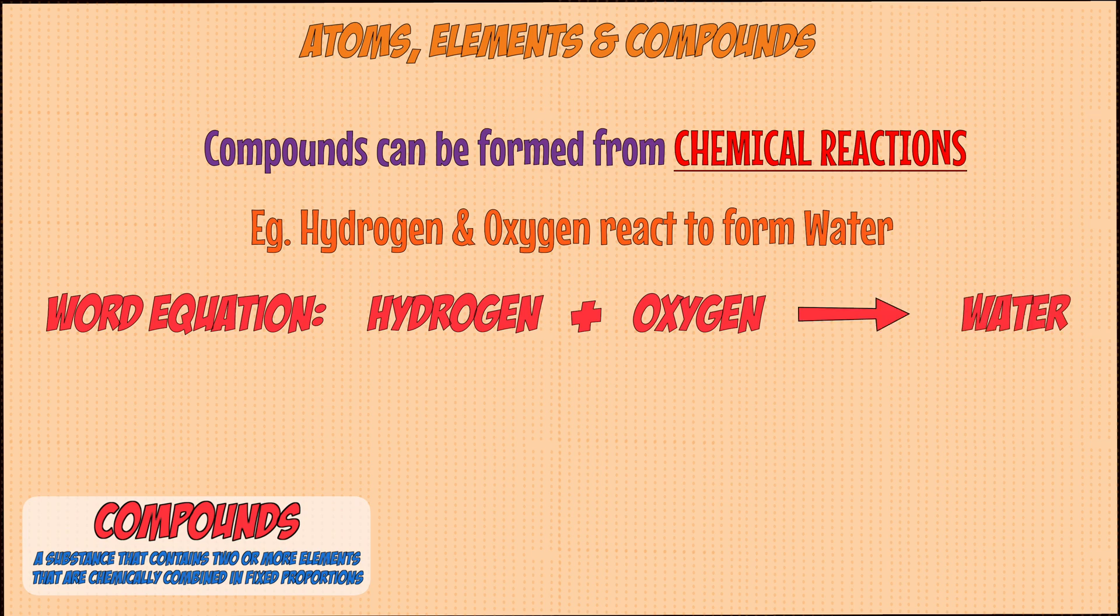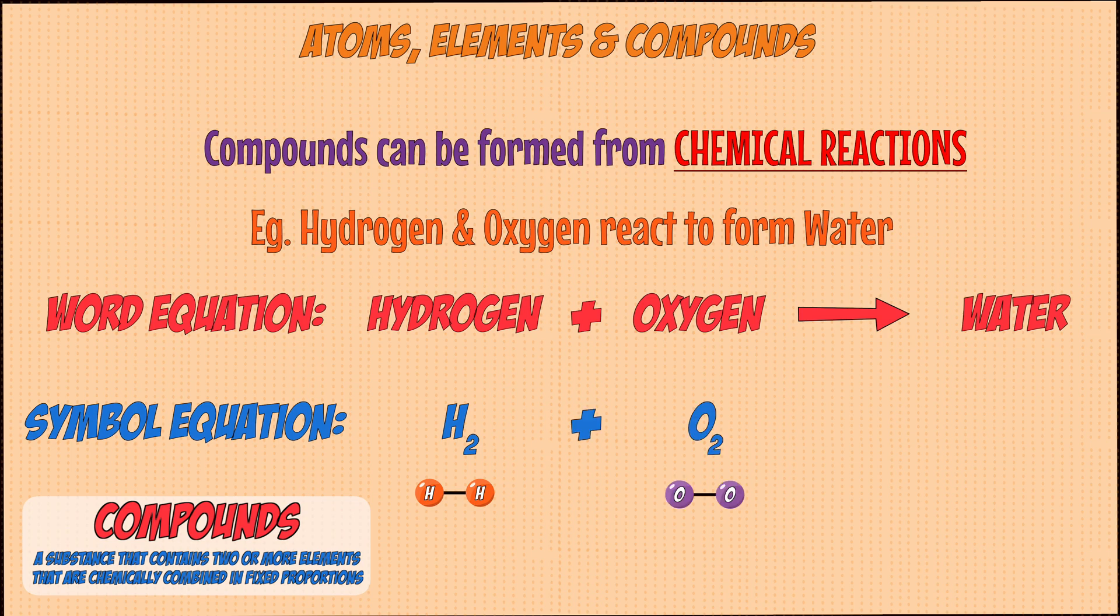Or you can rewrite this as a symbol equation where hydrogen is H2, oxygen is O2 and water is H2O. In a symbol equation, the equation needs to be balanced, which we'll go through in another video. But by doing that, you get two H2s and two H2Os.